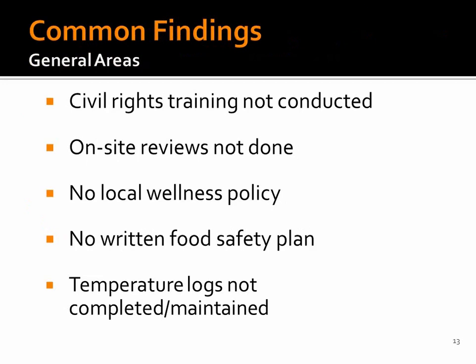This slide details some of the more common findings we see with general program areas. Civil rights training has not been conducted for the required staff. Remember, training must be done on an annual basis — keep documentation such as the agenda, having staff sign in, or any materials or handouts used for training. On-site reviews have either not been done or were not done by February 1st; this is an annual requirement. The reviews should be checked once completed to ensure all information has been documented. A written local wellness policy was not available. There is no written food safety plan — the template printed out from the website is only acceptable if it has been completed and includes the practices and procedures to be followed by your staff. Temperature logs have not been completed, or they are available but staff are not using them.